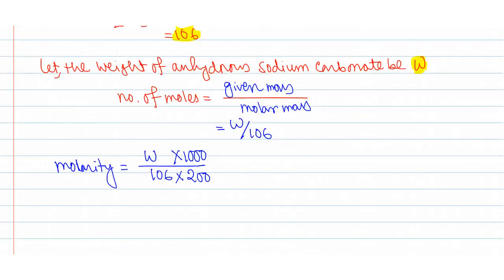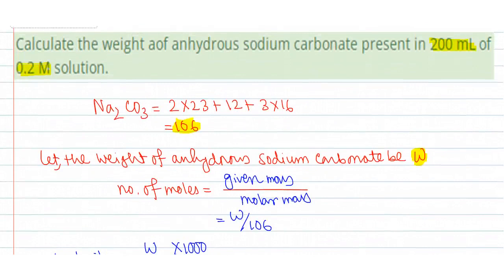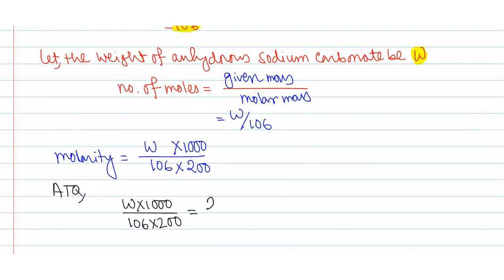Now according to question, the molarity, that is W times thousand by 106 times 200, is equal to 0.2, which is 2 by 10.